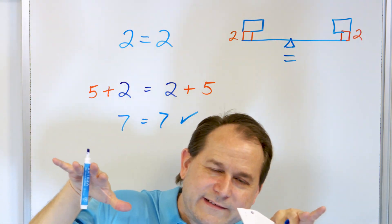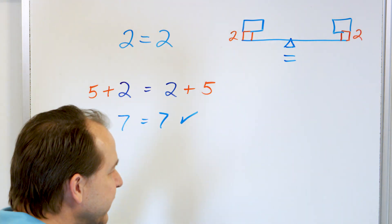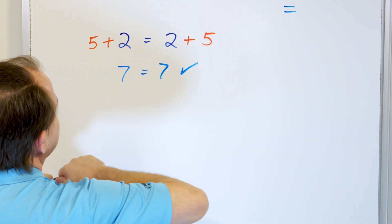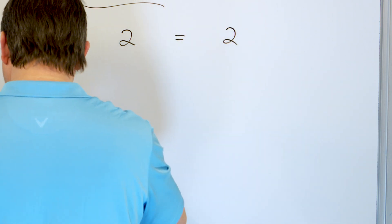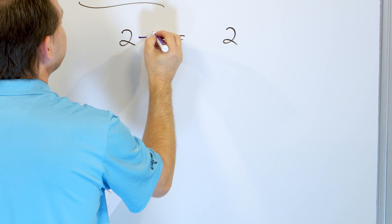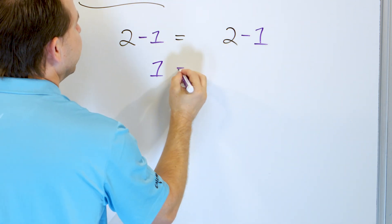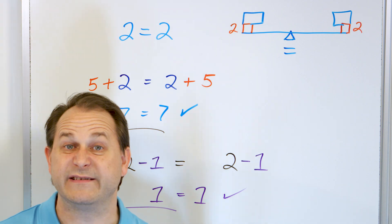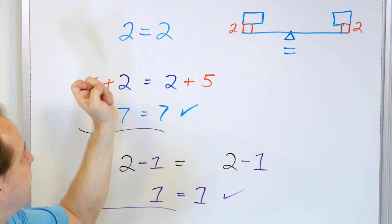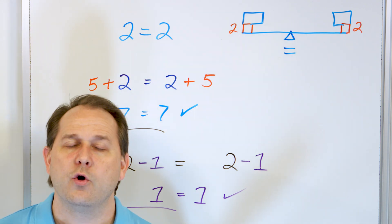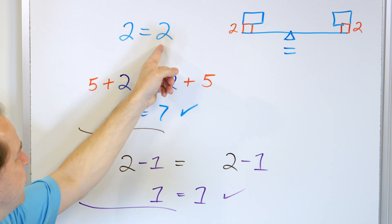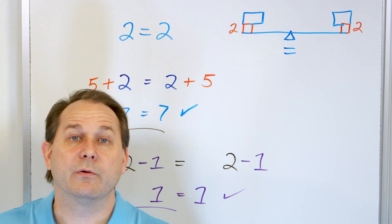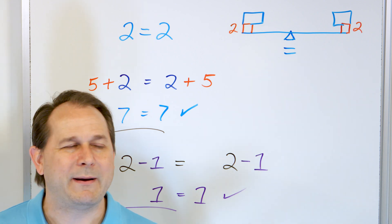If I add a little bit more to one side, then of course things aren't balanced anymore and nothing works. So this whole process works for addition — I can add to both sides. I can also subtract from both sides. I can start with 2 equals 2, and if I want to, I can subtract 1 from both sides. 2 minus 1 is 1, 2 minus 1 is 1, the thing is still balanced. We're going to learn that I can multiply both sides by some number — multiply by 4 on both sides and get 8 and 8, still balanced. Or divide both sides by 2 and get 1 on both sides, still balanced. So I can add, subtract, multiply, and divide both sides of an equation by any number I want.